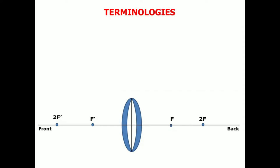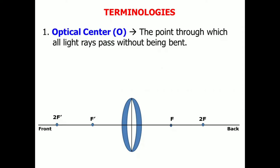The first term that we have to know is the optical center, which is represented by a capital O, the point through which all light rays pass without being bent. And it is located here, at the very center.